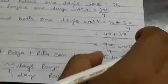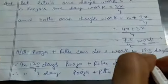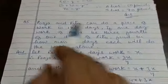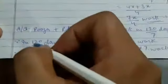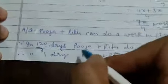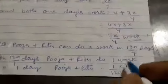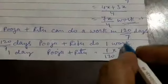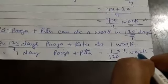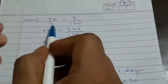According to the question, Puja and Ritu can do the work in 120 by 7 days — 17 and 1/7 simplified becomes 120 by 7. Since in 120/7 days they together do 1 complete work, in 1 day they do 7 by 120 work. From our first equation, 7X by 4 equals 7 by 120, and both will be equal.